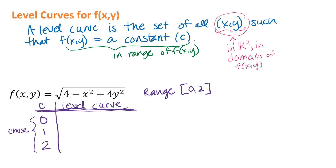We will look at some of these on the computer at the end of this video and let a computer graph a whole bunch of them for different constant output values. The textbook sometimes might tell you some specific output values to use. The level curve I want to look at would be when my output of the function, f(x, y), is equal to that specific constant value. I'm going to put in this constant for my output and then think about what the x, y values are.